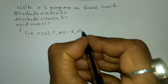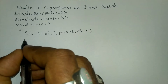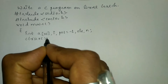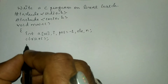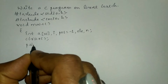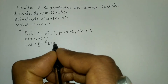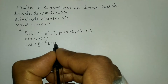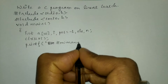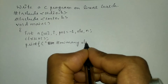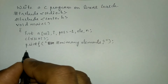Next we will write the variables element and n. Here I am going to write the clrscr function which is used to clear the screen. Now we will ask the user how many elements using the printf function, with the message in double quotation marks, ending with a semicolon.